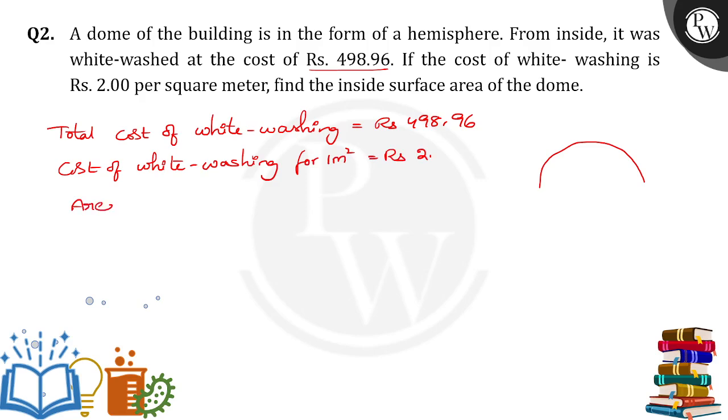So the inside area of the dome is equal to total cost divided by cost per meter square, which is equal to 498.96 divided by 2.